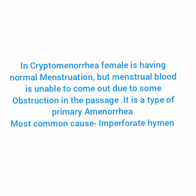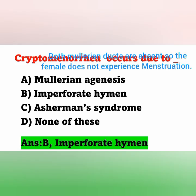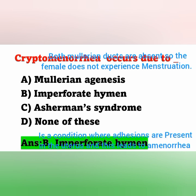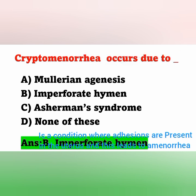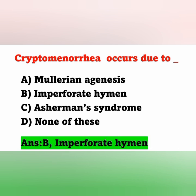So in our options, Imperforate Hymen is there, and that is the correct answer — Option B, Imperforate Hymen. Option A, Mullerian Agenesis, means both Mullerian ducts are absent, so the female may experience amenorrhea or absence of menstruation. Option C, Asherman Syndrome, means there will be adhesions present in the uterus, and this can also lead to amenorrhea.